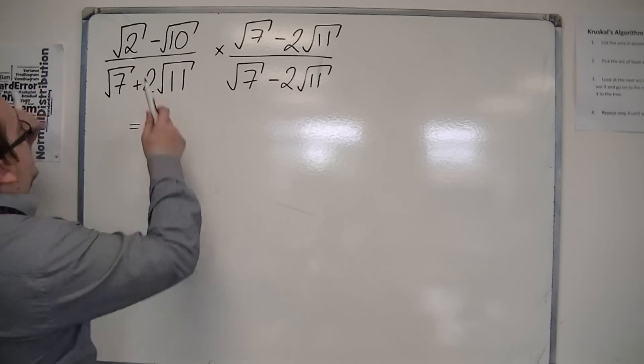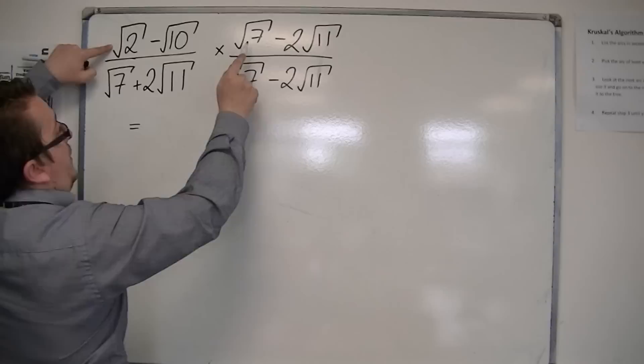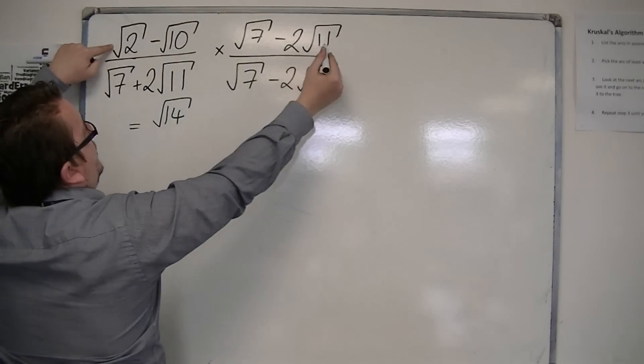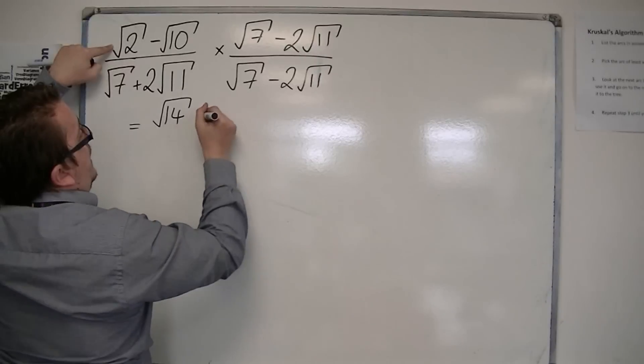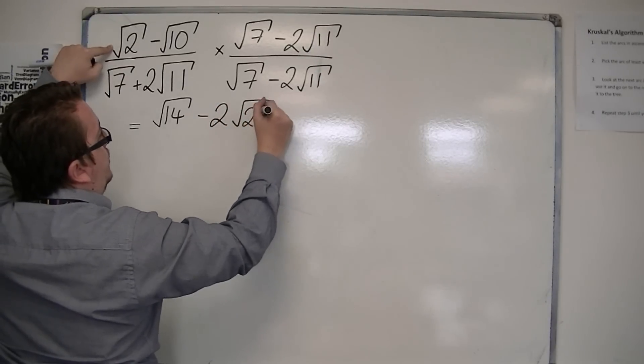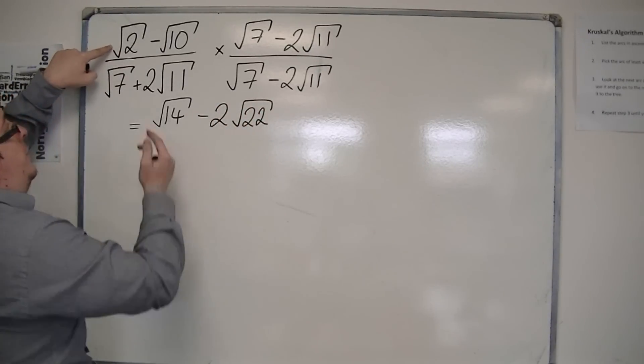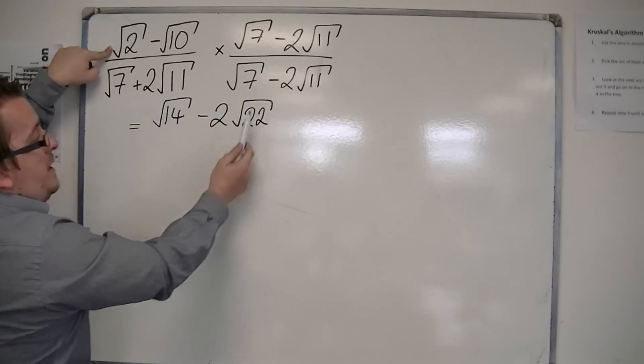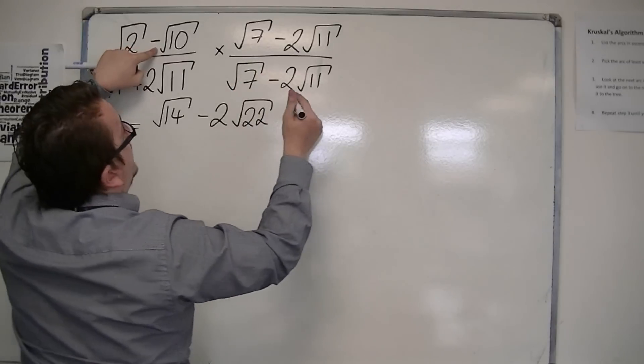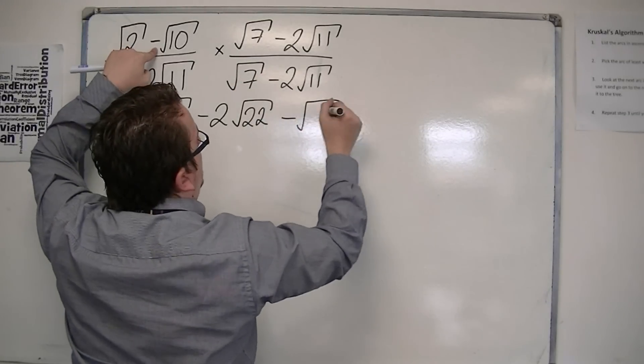So, we're going to have root 2 times root 7 is root 14. You've got root 2 times 2 root 11 is minus 2 root 22. So the root 2 and the root 11 combined to make root 22. You've got minus root 10 times root 7, so that's minus root 70.